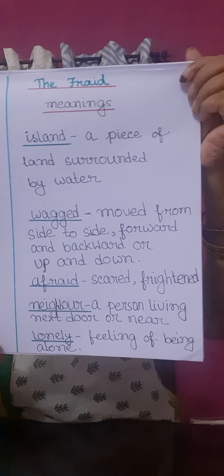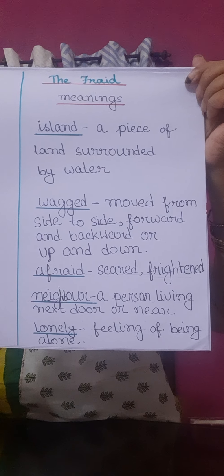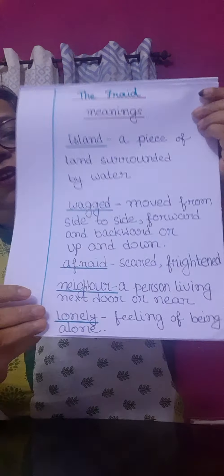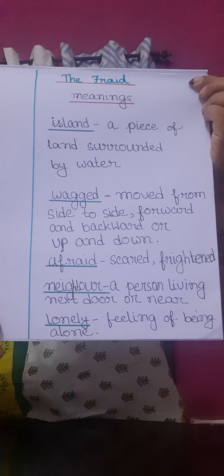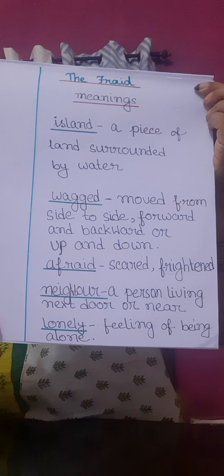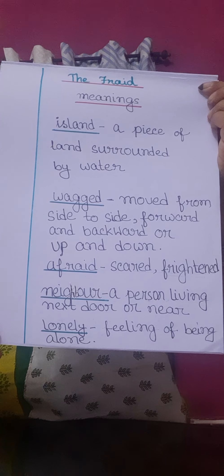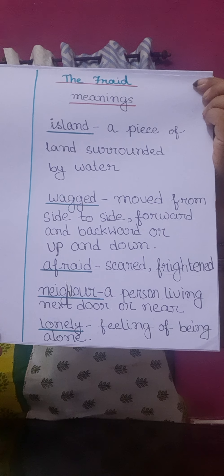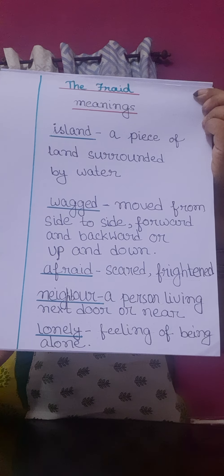You learn from the book and I will discuss some word meanings. The first one is island — meaning a piece of land surrounded by water on all sides. Wand means moved from side to side, or moved forward and backward, or moved up and down. Afraid means scared or frightened. Neighbour — a person living next door or near. And lonely means feeling of being alone.